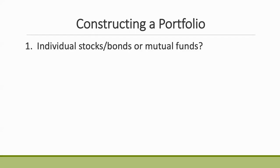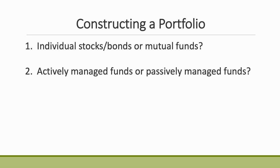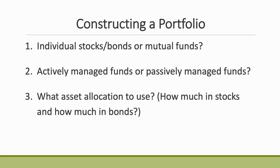Constructing a portfolio: you're going to have to decide whether you want to use individual stocks and bonds or mutual funds. If you're going to use mutual funds, you need to decide whether they should be actively managed or passively managed. And you need to figure out what asset allocation you want to use — the big question being how much in stocks and how much in bonds.